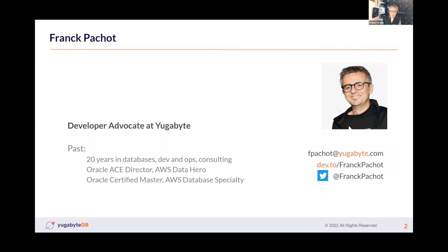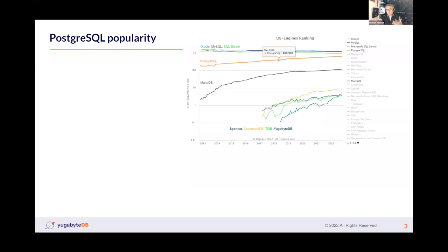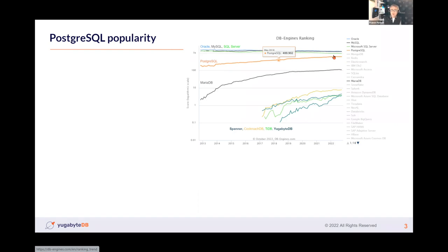The most important thing is that you can reach me on Twitter or by email — I'm very active on Twitter, but also easy to find on LinkedIn. I'll start with why Postgres compatibility for a new database. Something everybody has seen in recent years is the Postgres popularity. This is the database ranking engine, based on popularity in social media, Stack Overflow questions, etc. We see the old databases at the top but not growing anymore, and Postgres is really growing in popularity, along with some distributed SQL databases.